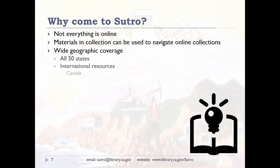We offer wide geographic coverage. While we have some materials on California, we mostly focus on other states — for California genealogical research, I recommend the California History Room, our sister branch in Sacramento. Sutro Library is particularly strong in eastern states due to the generosity of local chapters like the DAR. We even have resources for international regions like Canada, Europe, Mexico, and the West Indies — the bulk being for the first two, though we have quite a Mexicana collection.